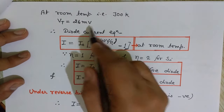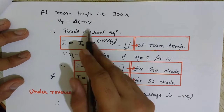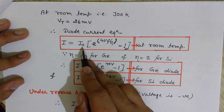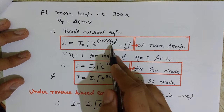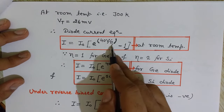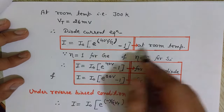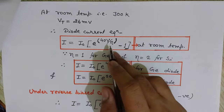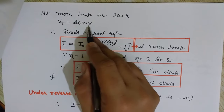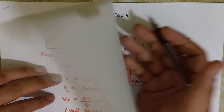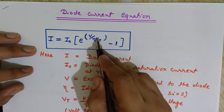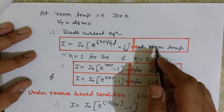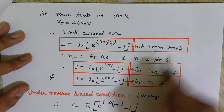So 26 millivolts is placed in the equation. The diode current equation at room temperature becomes: I equals I₀ times e to the power 40V divided by eta, minus 1. We have simply replaced VT with 26 millivolts in this equation — only this parameter has changed.